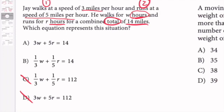So I know he walks 3 miles per hour, so I'd say 3 times W, which is the number of hours he actually walked, plus he runs at 5 miles per hour. So my answer choice is A.